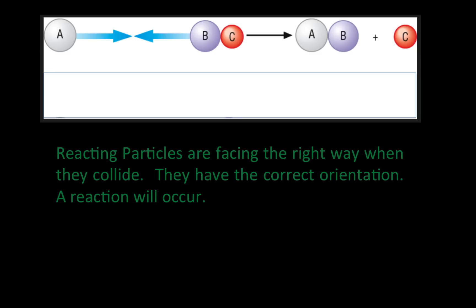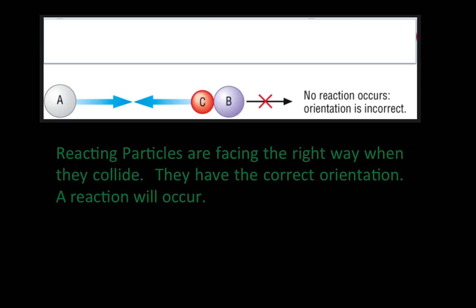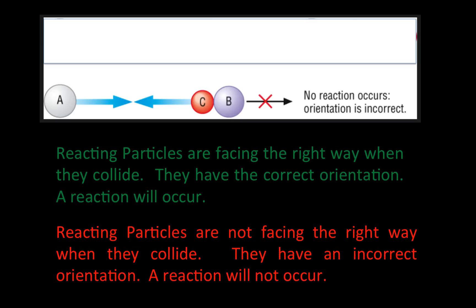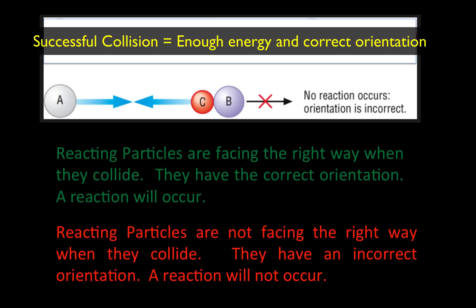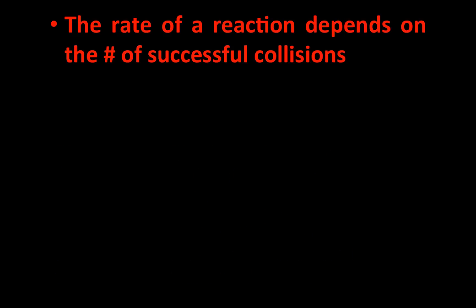In this diagram, the reacting particles are facing the right way when they collide, so there is a chemical reaction. In the bottom diagram, they're not facing the right way — they have an incorrect orientation and a reaction will not occur. A successful collision is one in which the reacting particles collide with enough energy and with the correct orientation. The rate of a reaction depends on the number of successful or effective collisions.